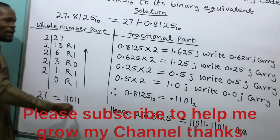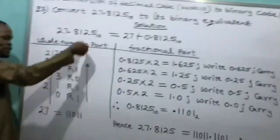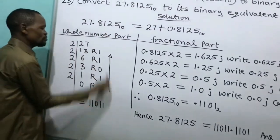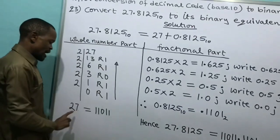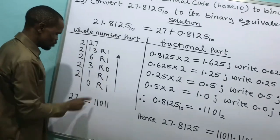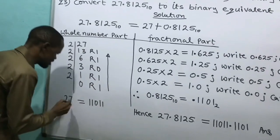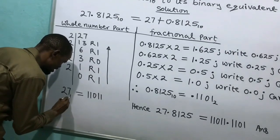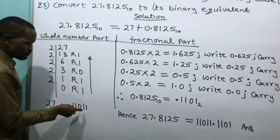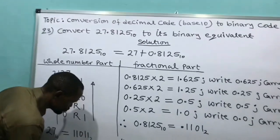Taking the remainders from bottom upward, the direction is down to upward. Reading upward: 1, 1, 0, 1, 1 base 2. That means my 27 base 10 is equal to 11011 base 2.